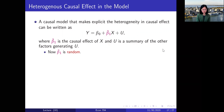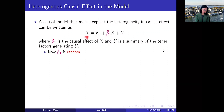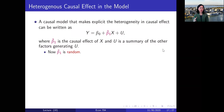Everything else stays the same: β₀ is still a non-random constant intercept, y is still the dependent variable, x is still the causal variable whose causal effect on y we are interested in, and u is still the summary of other factors participating in the generation of y.